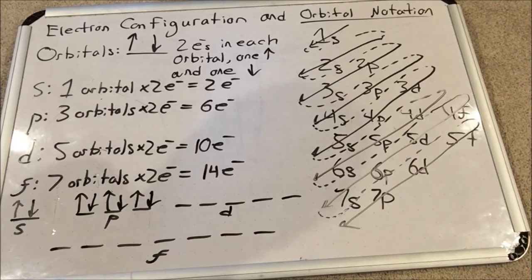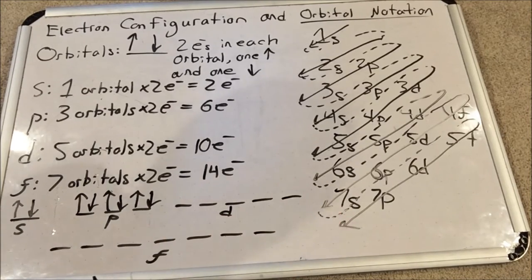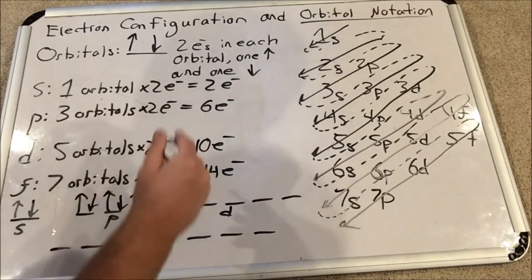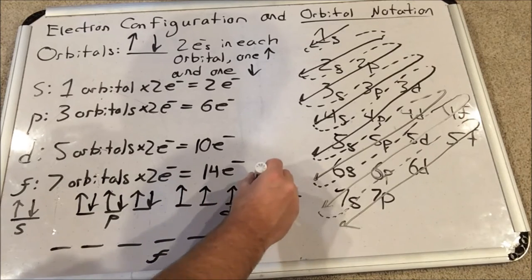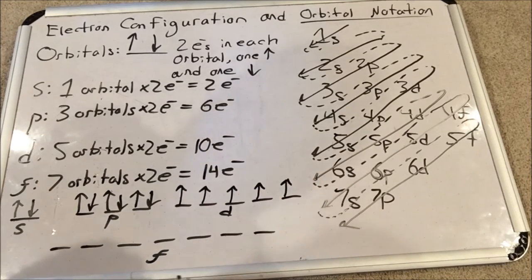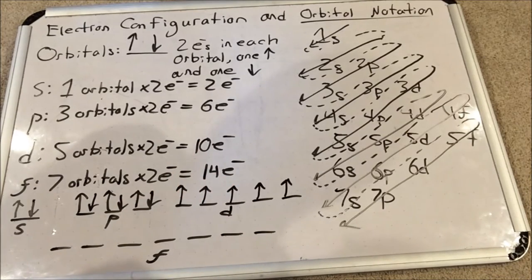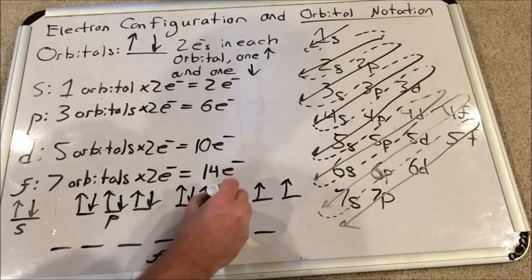The d sublevel has five orbitals, small space between, larger space between other sublevels around it. We will do the same thing we did for p by filling all the spin up electron locations first. Remember, electrons don't like to be next to each other because of their like charge—like charges repel. Then we'll go back and we'll shove in the spin down electrons.